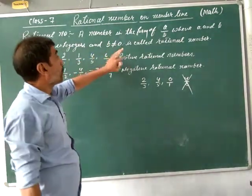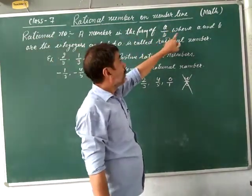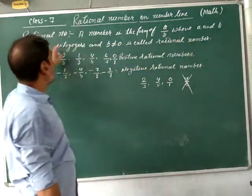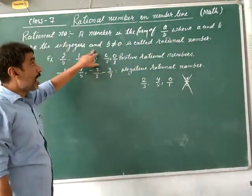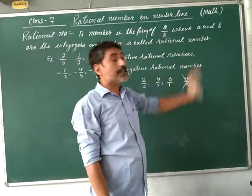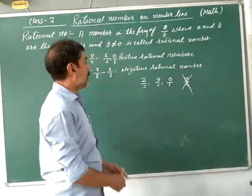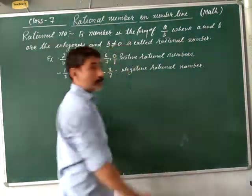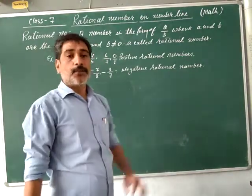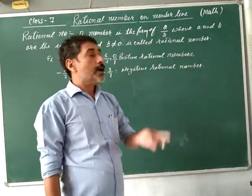A number in the form of A by B, where A and B are integers and B is not equal to 0, is known as a rational number. There are two types of rational numbers: positive rational numbers and negative rational numbers.